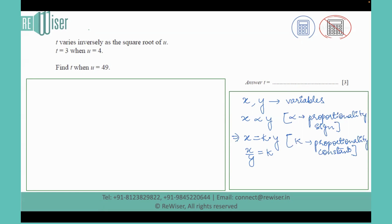So we'll apply the same concept here in the given question where we can see that t varies inversely as the square root of u. Inversely means we have to take 1 over square root of u. Now when we remove the proportionality sign, we write that t equals k times 1 over square root of u.